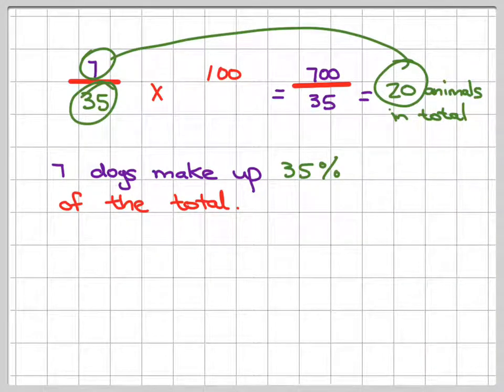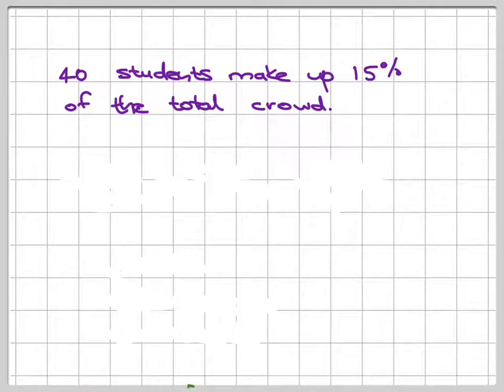Right, let's look at one more example. 40 students make up 15% of the total crowd.